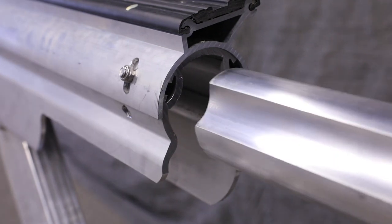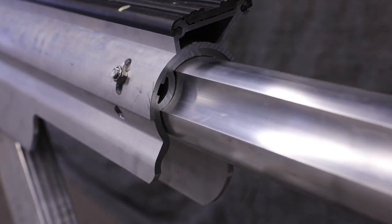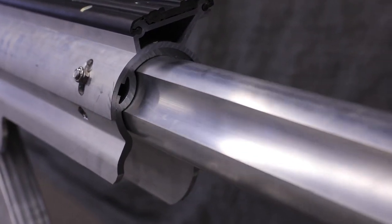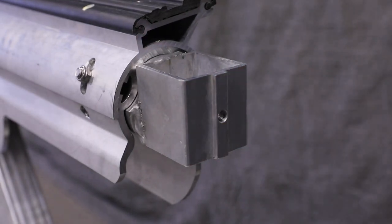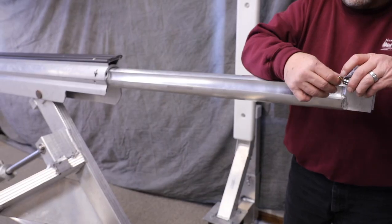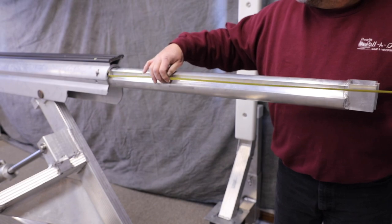At this point you're ready to slide the bow stop into the bunks. Set the length of your bow stop to center the weight of your boat on your lift.